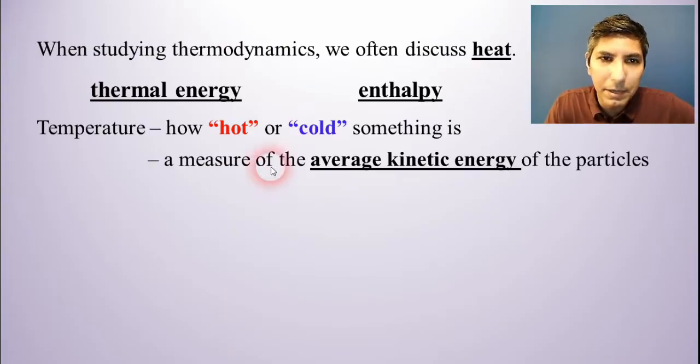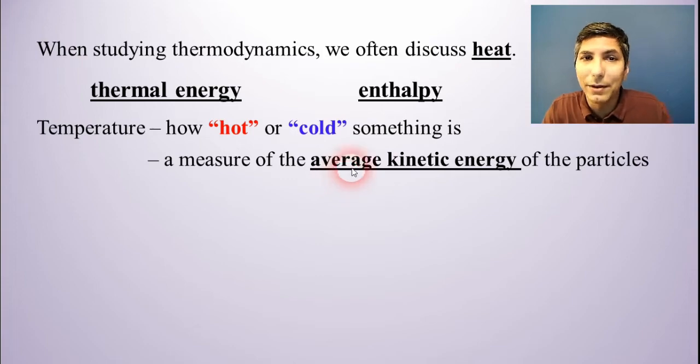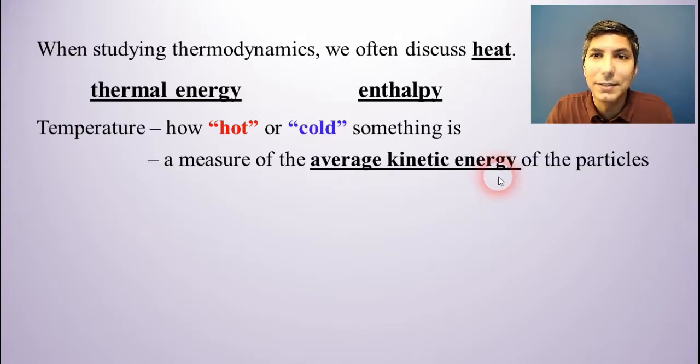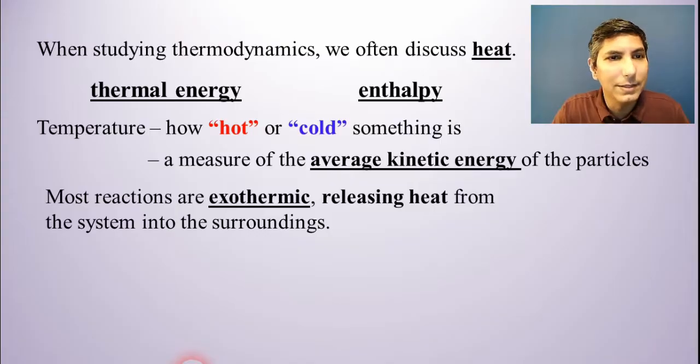Now this is important because on the AP exam they like to ask a question or sometimes multiple questions about this, and they'll ask you perhaps you'll have two samples of matter and they'll ask you which of these two samples of matter has the greatest average kinetic energy in the molecules. And the answer is whichever one has the higher temperature. Average kinetic energy is just a fancy way of saying temperature. If you have two samples that have the same temperature that means the molecules have the same average kinetic energy. I point that out because that does come up quite a bit on the AP curriculum and the exam.